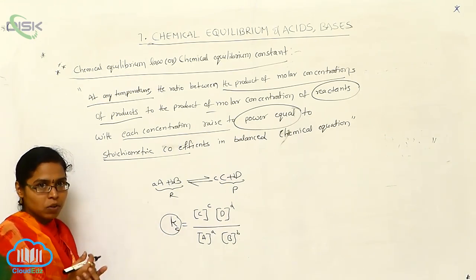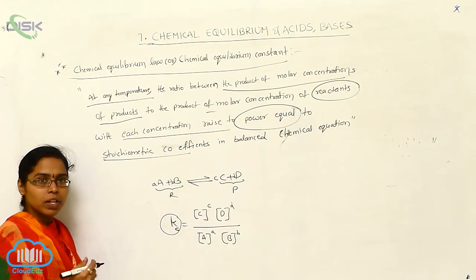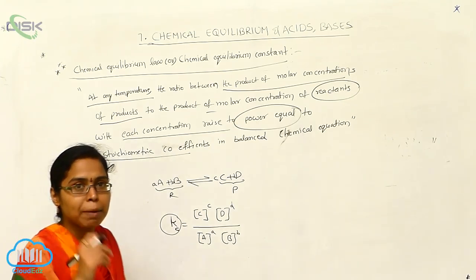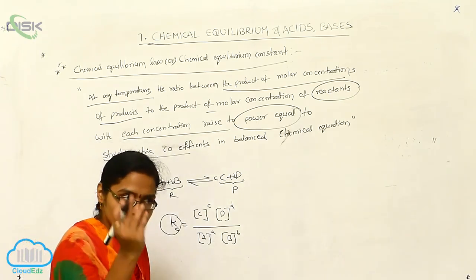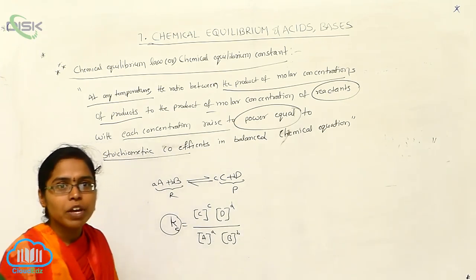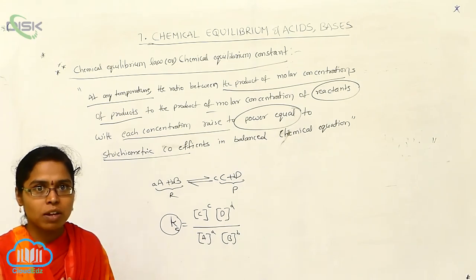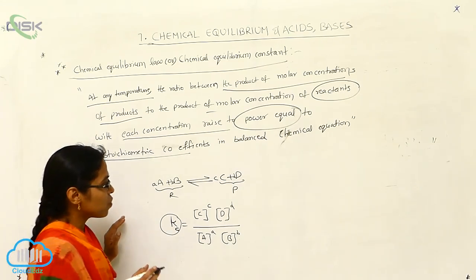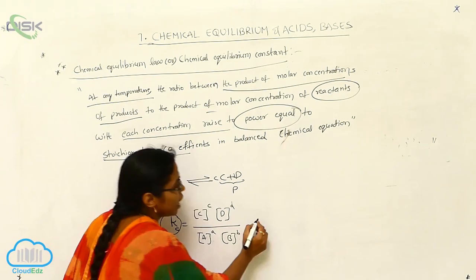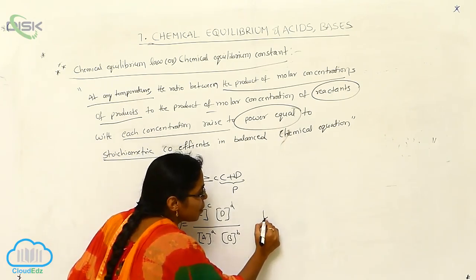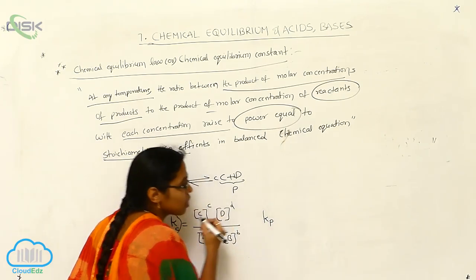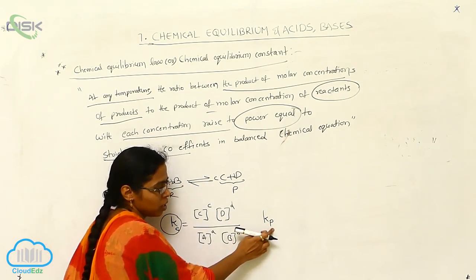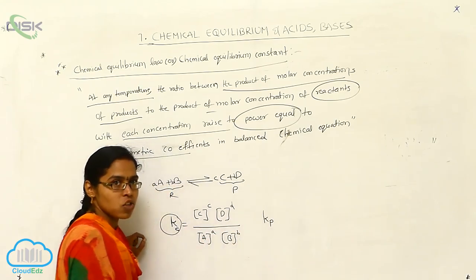If gas molecules are there, for the gas molecules we should not take the concentration. In place of concentration, we can use the word partial pressures. Whenever we are using the partial pressure, then the equilibrium constant converts into Kp — P means pressure, that is the partial pressure.